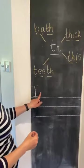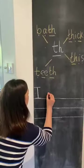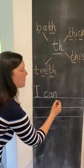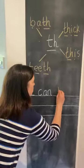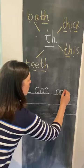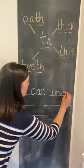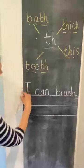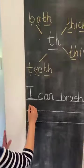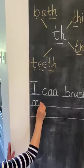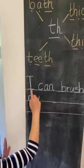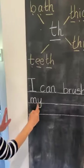Starting with the tricky word I. I've got to remember my finger space now. Can — c, a, n. I can brush — b, r, ush, sh. Sh diagraph at the end. I can brush my — tricky word my. If you remember that one, children, it's an m and a y, and the y goes underground. Remember I'm sitting my letters on the line.